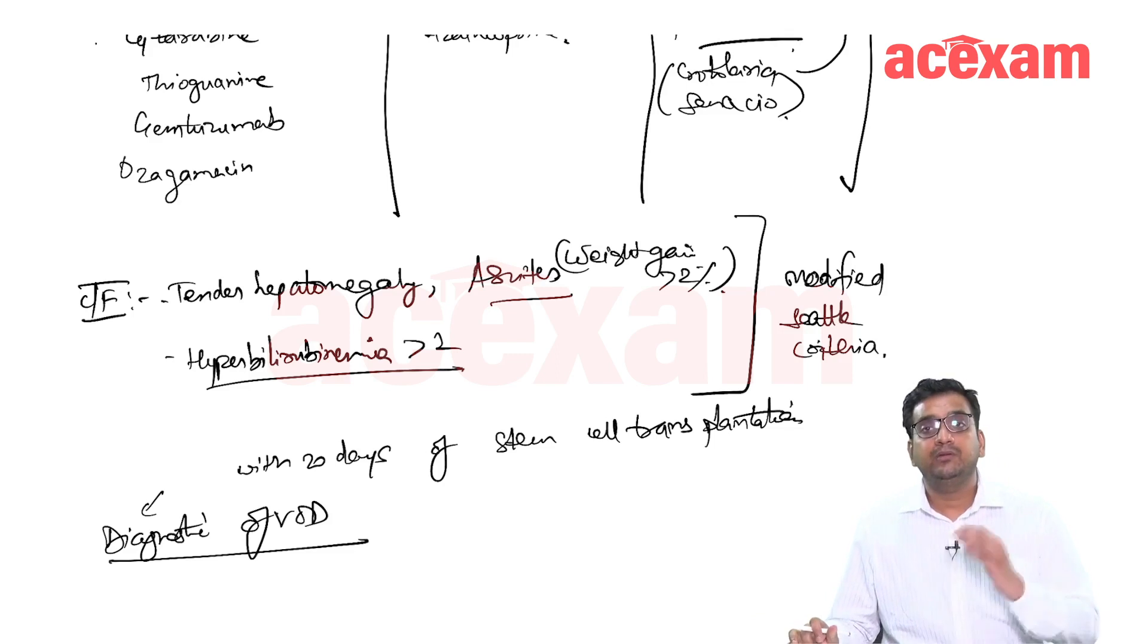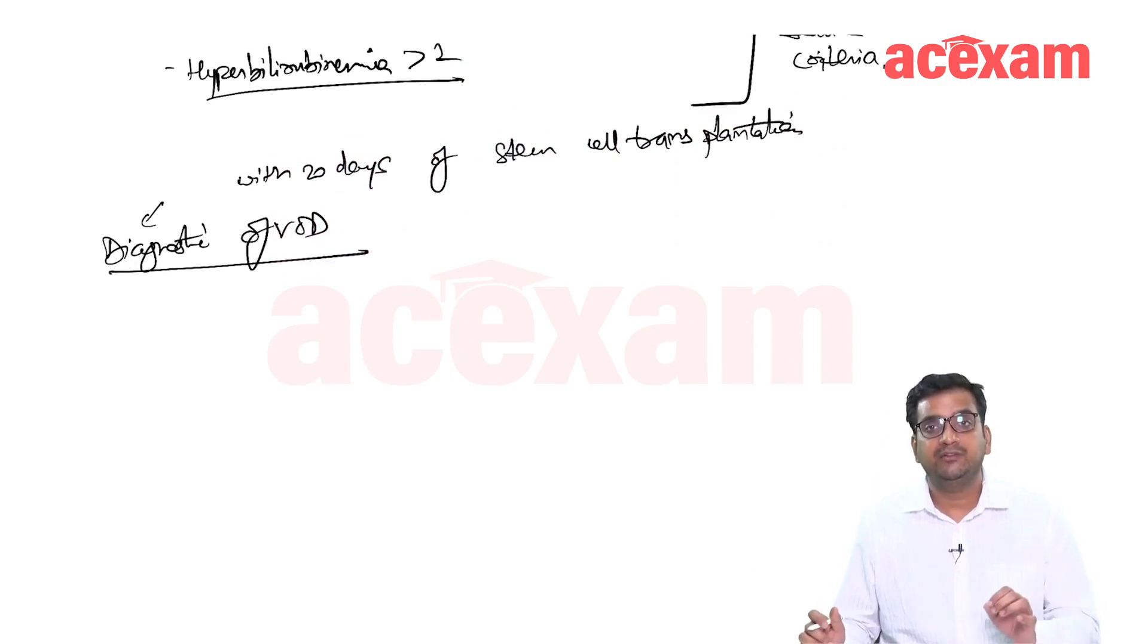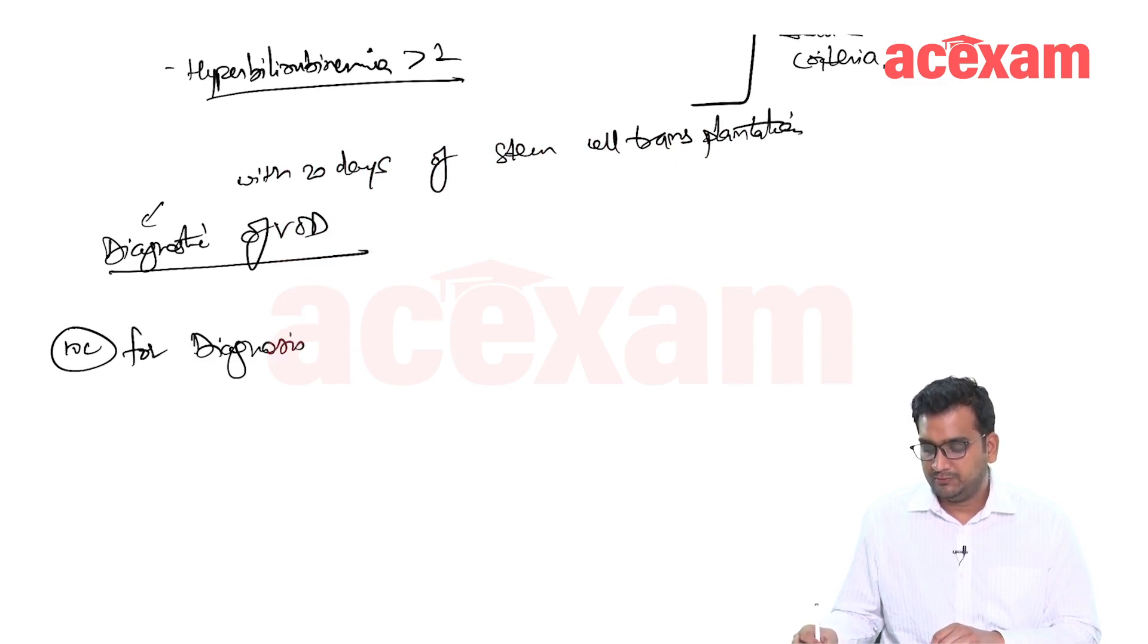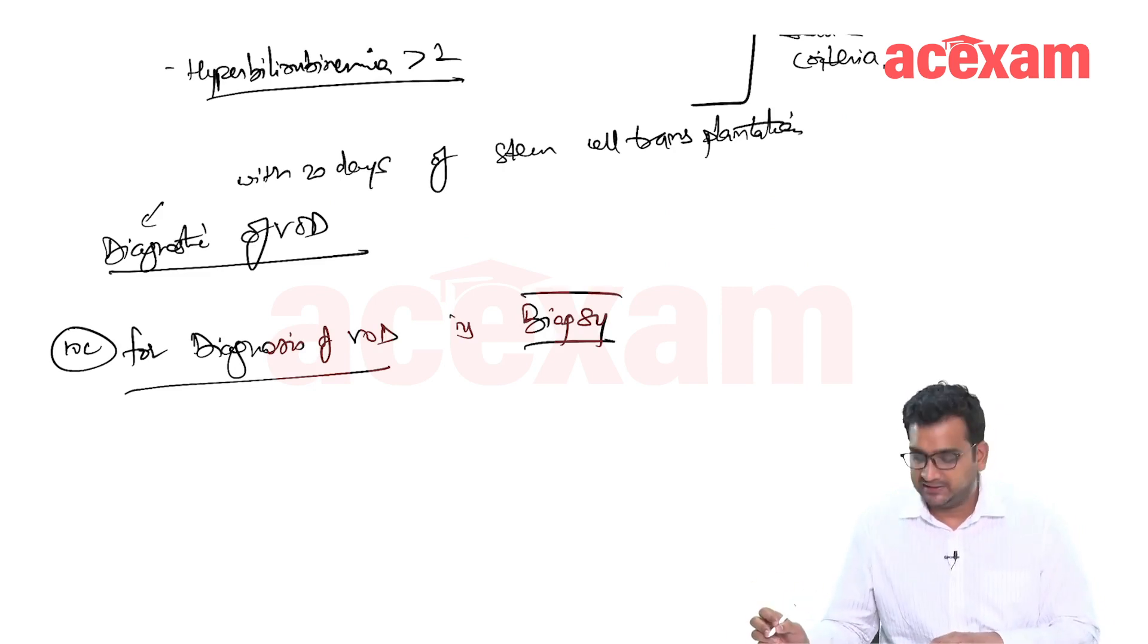We know that it is a sub-endothelial sclerosis. To confirm that it is sub-endothelial sclerosis, we will have to do a biopsy. That is why the investigation of choice for diagnosis of VOD is biopsy or a liver biopsy. What we will be seeing? Sub-endothelial sclerosis in the hepatic veins.